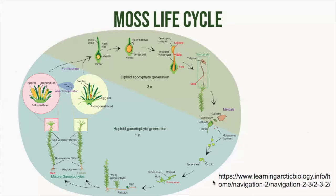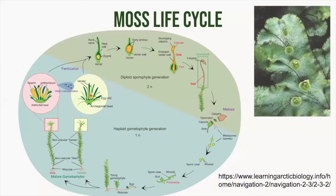Most mosses and liverworts are also able to reproduce from small pieces of shoot or even leaves. This is known as a non-sexual or asexual reproductive method. Specialized structures known as gemmae form on the leaf tips or from specialized stalks, and they then detach from the parent plant to form a new individual.